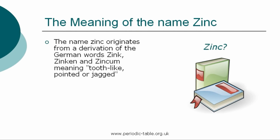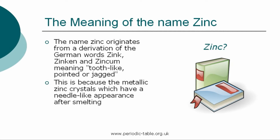The name originates from a derivation of the German words Zink, Zinken, and Zinkum, meaning tooth-like, pointed, or jagged, and it is believed that these words were used in reference to the metallic zinc crystals, which have a needle-like appearance after smelting. The crystalline structure can easily be seen on galvanized iron sheets.